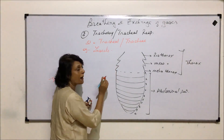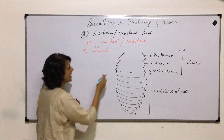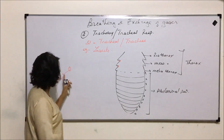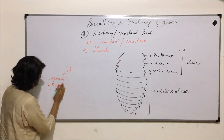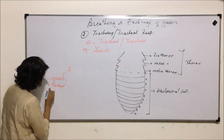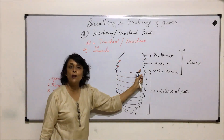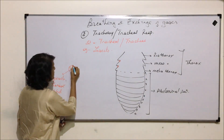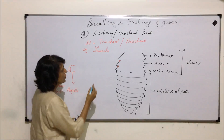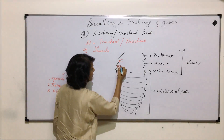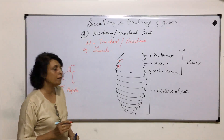Let us draw these spiracles. The one in the thorax is at the junction of prothorax and mesothorax, and the second is between mesothorax and metathorax — so there are two thoracic spiracles. There are eight abdominal spiracles, located in the first eight abdominal segments. Each spiracle opens into a slightly swollen structure which is known as ampulla.